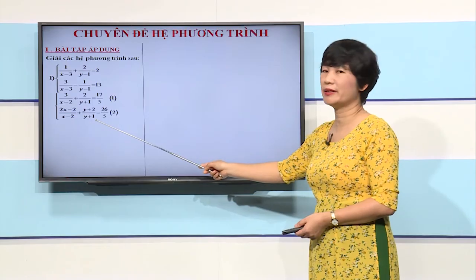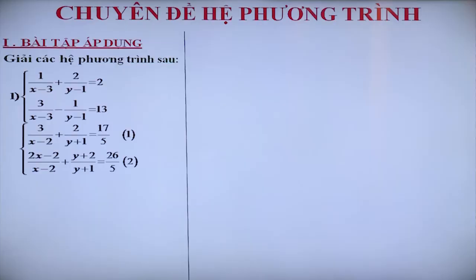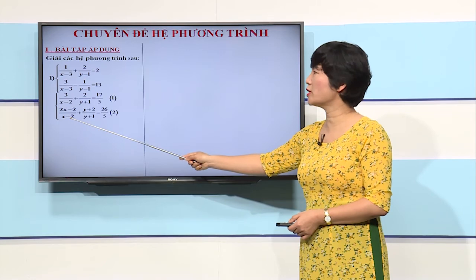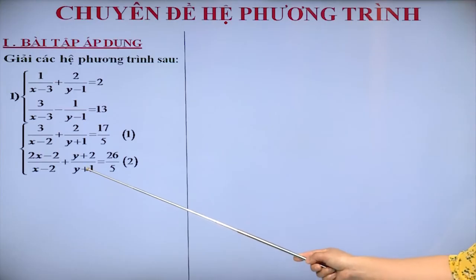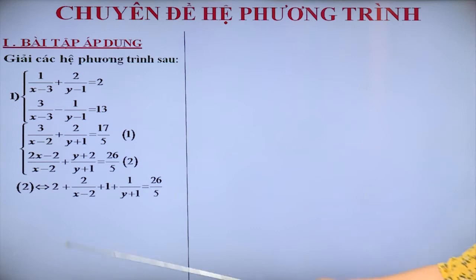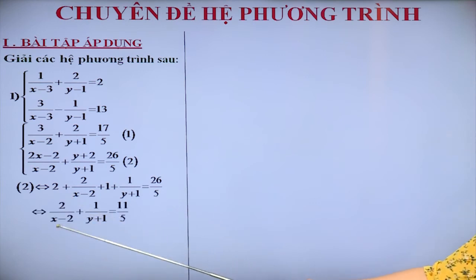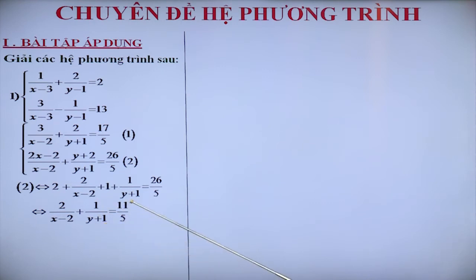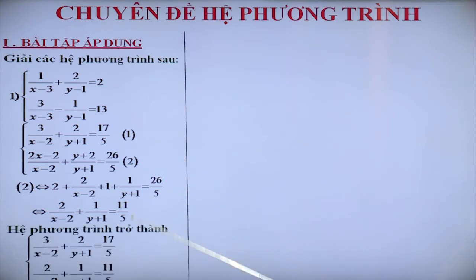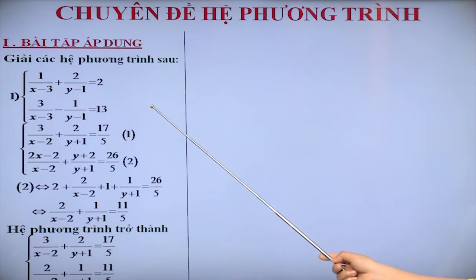Tuy nhiên, phương trình thứ 2 của hệ thì chưa có điều ấy. Nếu ta chia tử và mẫu của các phân thức trong phương trình thứ 2, thì chúng ta sẽ thu được phương trình mới: 2 cộng 2/(X trừ 2) cộng 1 cộng 1/(Y cộng 1) bằng 26/5. Chuyển vế chúng ta thu được phương trình 2/(X trừ 2) cộng 1/(Y cộng 1) bằng 11/5. Kết hợp với phương trình thứ nhất của hệ, ta có hệ phương trình có dạng hoàn toàn giống như dạng phương trình chúng ta vừa làm, và các em có thể làm tiếp tục tương tự như trên.